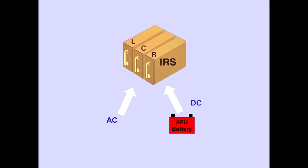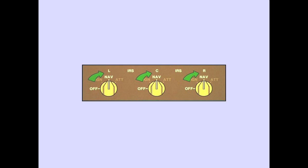The IRS is normally powered by airplane AC power. Otherwise, the IRS will use DC power from the APU battery. The alignment process is initiated by rotating the selector from OFF directly to NAV. The alignment completes in 10 minutes.